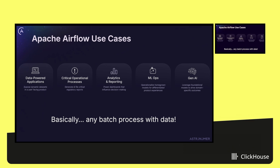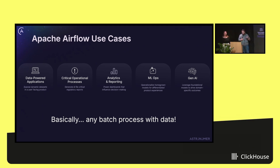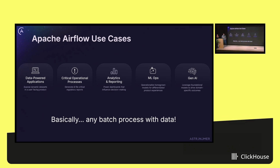Airflow is used to write and run data workflows and data pipelines — basically any job that you want to run on some schedule, whether that's hourly, daily, or weekly. Across our customer base and the broader community, we see a bunch of different use cases: taking data, transforming it, and loading it into a database to show to your customers — like RAMP. There are also critical operational processes; we have a ton of folks that use Airflow to file regulatory reports. And then analytics and reporting, of course, which is the most traditional data use case.